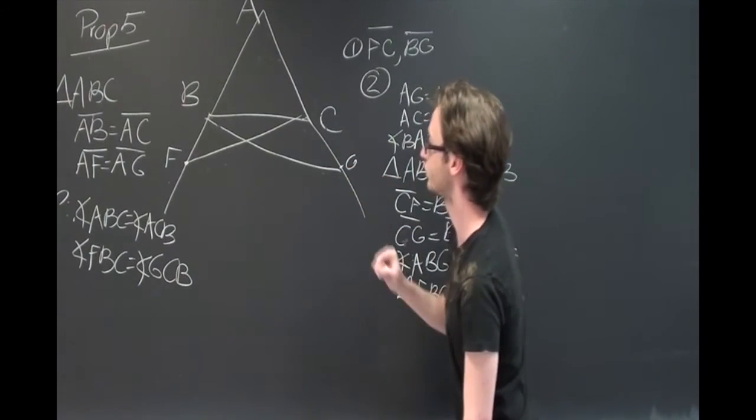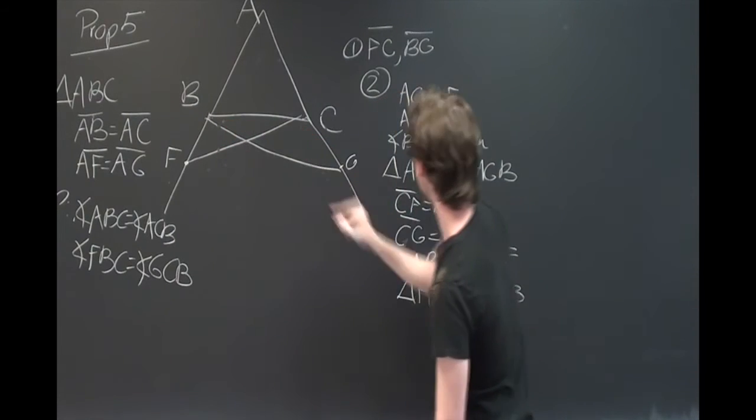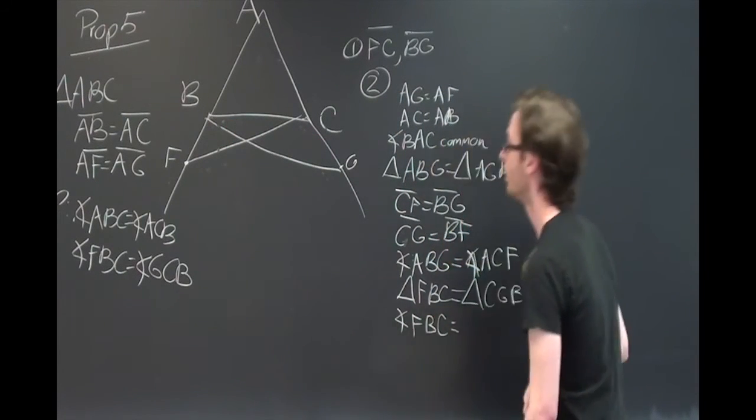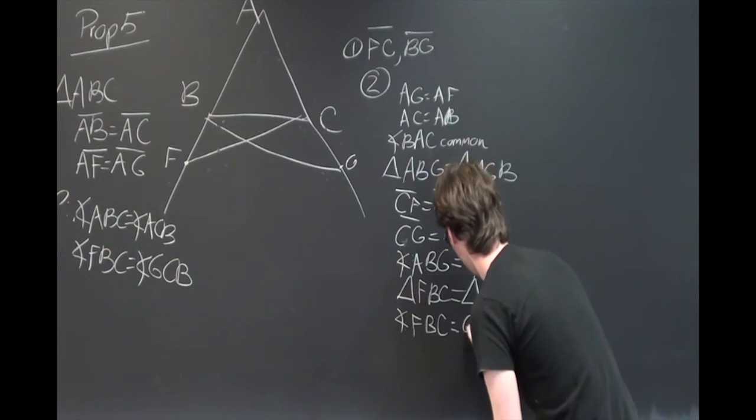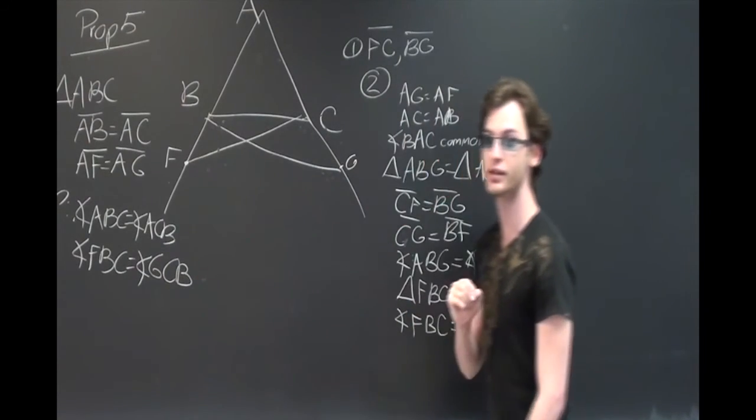And because the entirety of the triangles are equal to each other, we know their angles will be equal. So, angle FBC will be equal to angle GCB. And these are the angles under the base, which is one half of what we needed to prove.